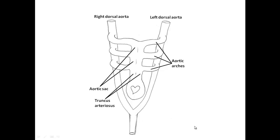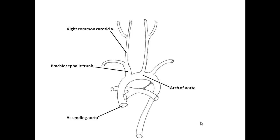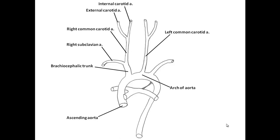We're going to move from the early arrangement to something that looks more typical: the ascending aorta leading to the aortic arch with three branches. First is the brachiocephalic trunk, splitting into the right common carotid — with internal and external branches — and the right subclavian artery. The second branch is the left common carotid, and the third is the left subclavian. The aorta continues inferiorly through the thorax and abdomen, eventually splitting into the two common iliac arteries.